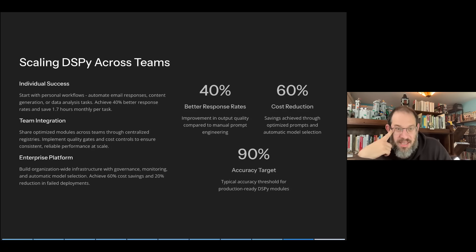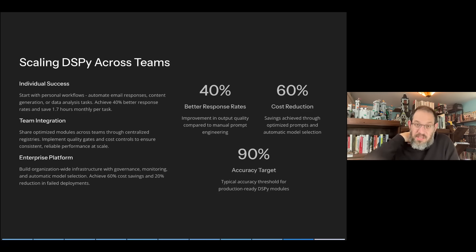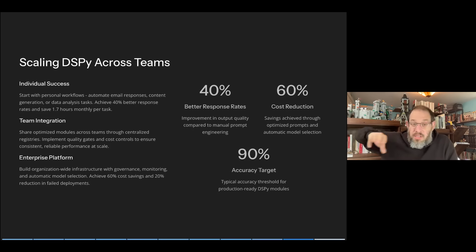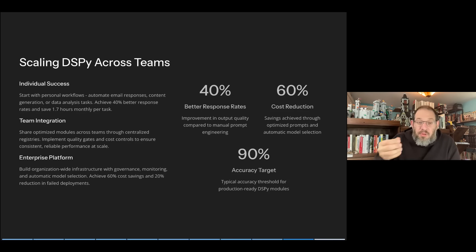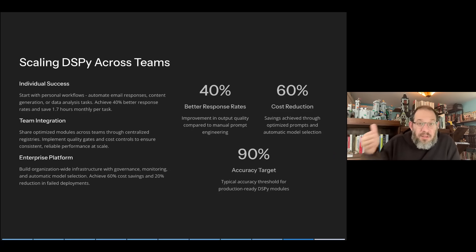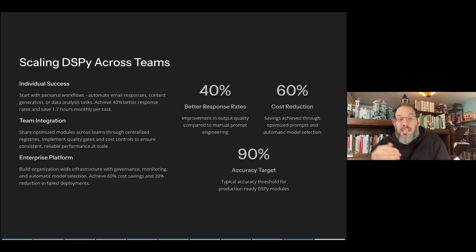To scale DSPy across teams is a separate challenge. Starting with personal workflows, you can automate email responses, content generation, data analysis. Teams are starting to use this successfully, but it requires sharing optimized modules across teams through centralized registries so you have scalable architectures and aren't all working off different optimizers. It requires quality gates and cost control — determining the acceptable cost you will pay for quality at a given scale. And it requires infrastructure for governance and automated model selection. If you don't do these things, you end up with a complex library of optimizers maintained on a best-effort basis, costs run out of control, and you have great difficulty building a consistent prompting pipeline. If you're a team leader, you have to be thinking about this as you start to scale your production pipelines.